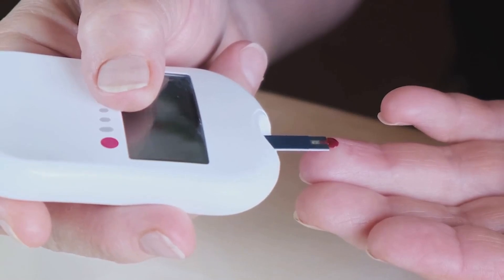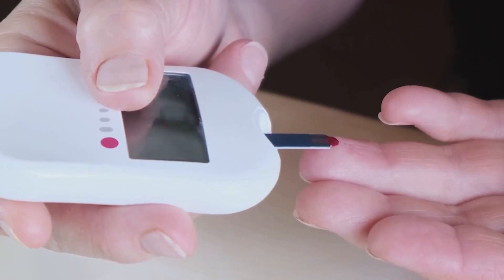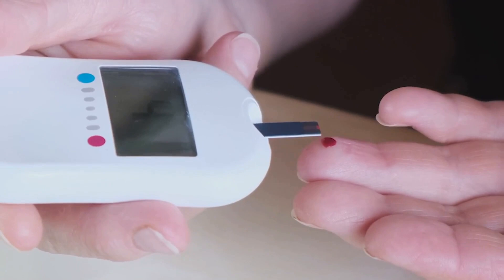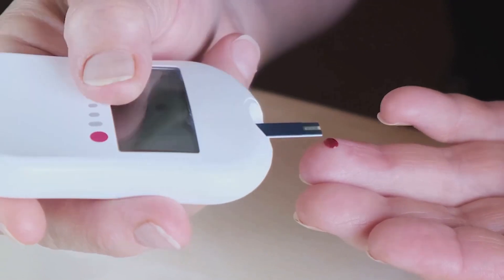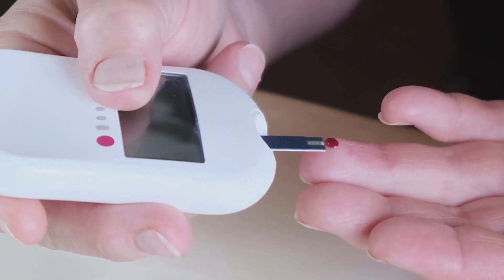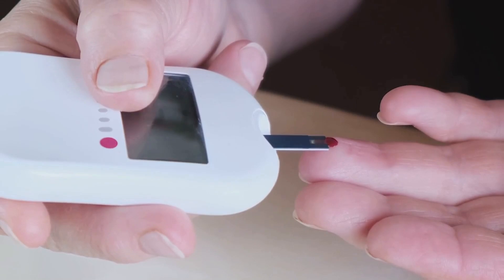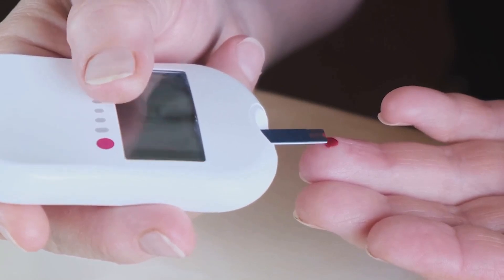Ninth, we find glucose toxicity. Prolonged exposure to high glucose levels can directly damage beta cells. This toxicity can further impair the cell's ability to produce insulin.